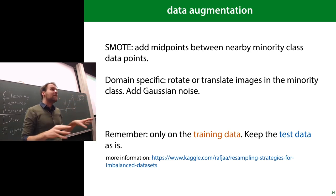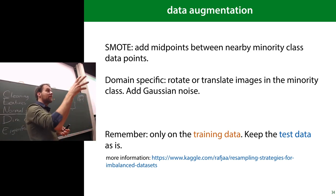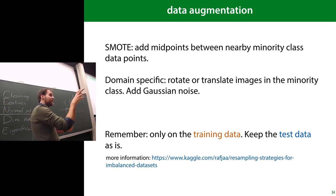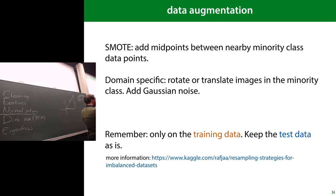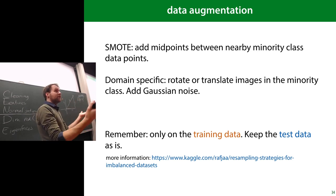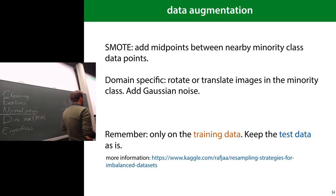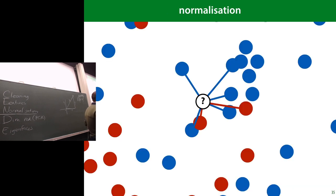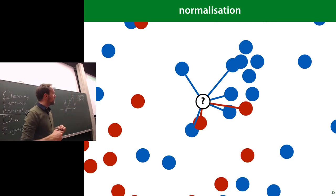For image data, you can rotate every image slightly or apply small translations, so the new training data you're sampling to fix class imbalance is genuinely new rather than a duplicate. Now, normalization. We have three versions: normalization, standardization, and whitening. These terms are often used interchangeably in the wild, so be careful — but within this course we'll use them consistently, following the Wikipedia convention.